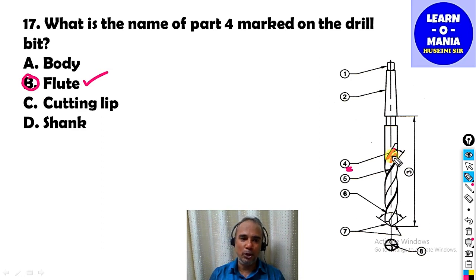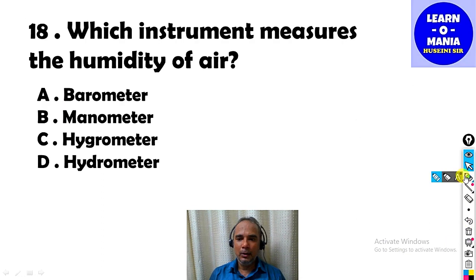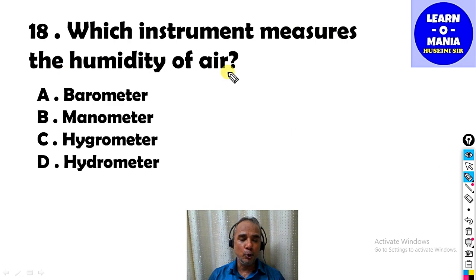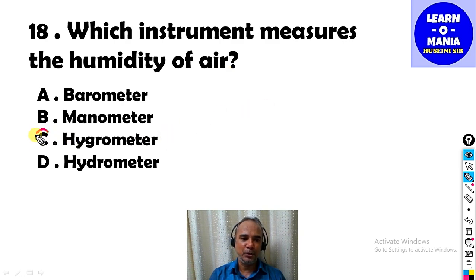The channel on the drill bit is called a flute. Next MCQ: Which instrument measures the humidity of air? Which instrument can be used to directly find humidity in air? The answer is option C — hygrometer.